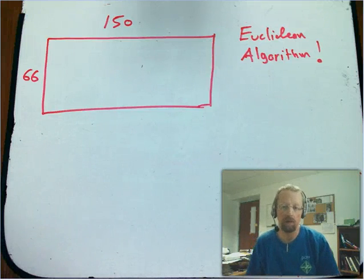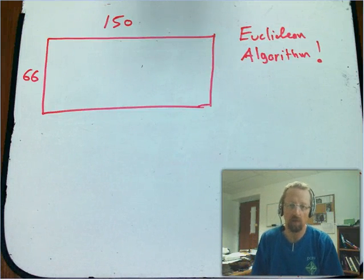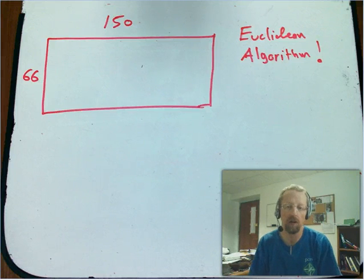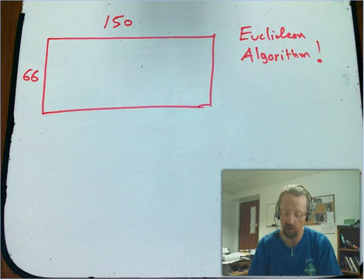So let's talk about the preeminent algorithm in number theory, which is the Euclidean algorithm. This sort of gets the ball rolling on really being able to figure out stuff.